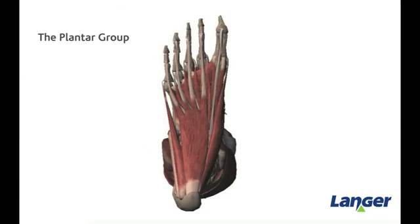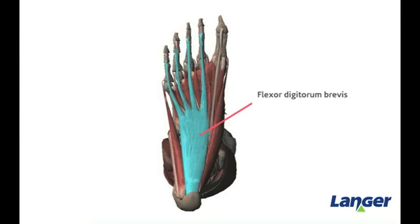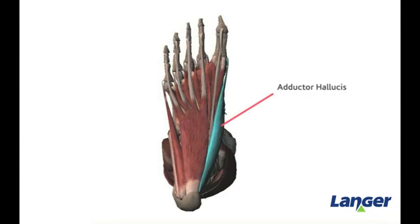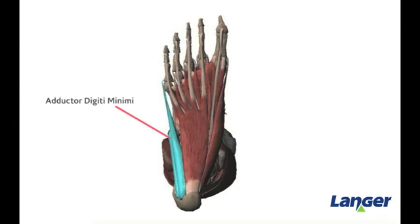The first layer of the plantar group is made up of three muscles: the flexor digitorum brevis, the abductor hallucus, and the abductor digiti minimi.